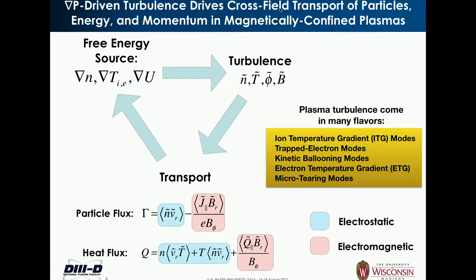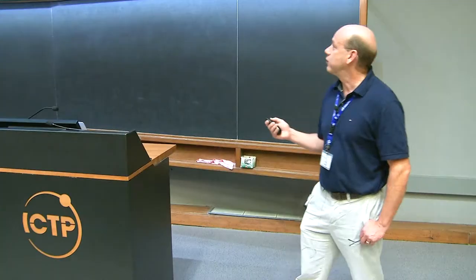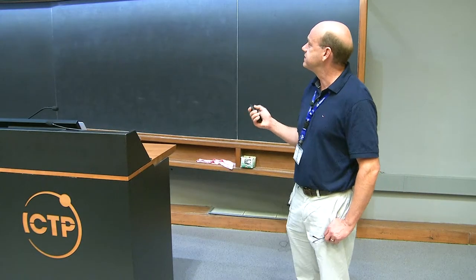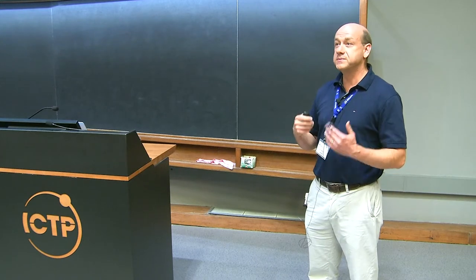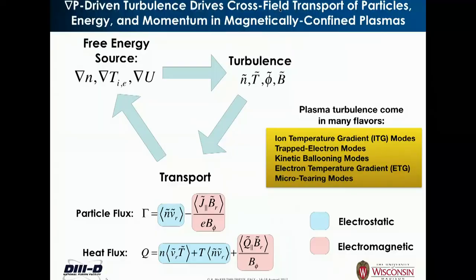These gradients drive turbulence in multiple fields — density, temperature, electrostatic potential, and magnetic fields — which then drives cross-field transport of the various kinetic properties, density, temperature, et cetera, feeding back and limiting the gradients sustained in the plasma. The turbulence has both an electrostatic and electromagnetic component that result in a particle flux and a heat flux. There are some exotic names for specific instabilities: ion temperature gradient modes, electron temperature gradient modes, trapped electron modes, arising from the specific geometry and kinetic particle populations.